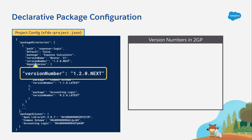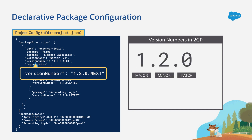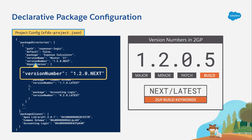There's something interesting about a 2GP version number versus its 1GP counterpart. You can see that there's the same major, minor, and patch version numbers that 1GP has, but 2GP adds a fourth portion to represent the build. When you specify the build, you can either use a number or one of two build keywords. In our sample config, the keyword "next" is being used. This tells the 2GP build system to automatically increment the build number the next time a package version is created, saving the developer from having to make tedious changes all the time.